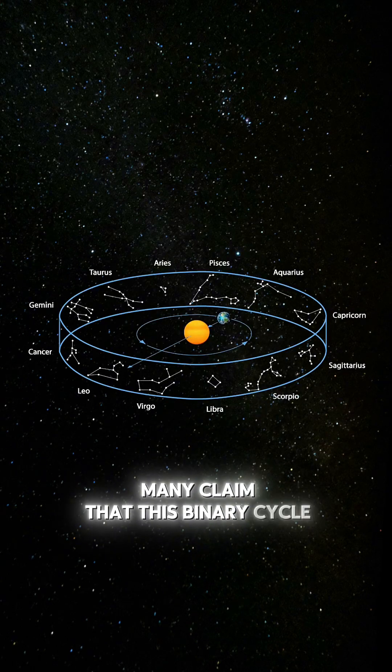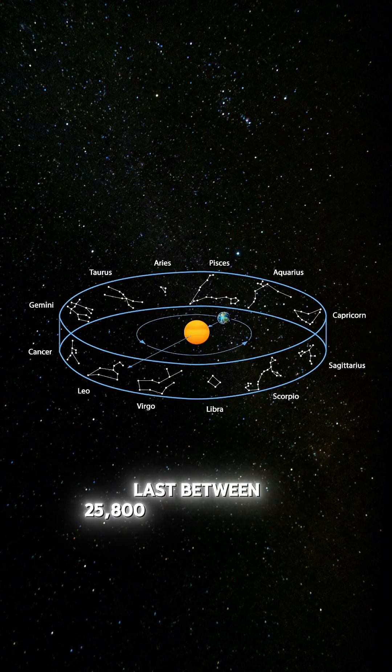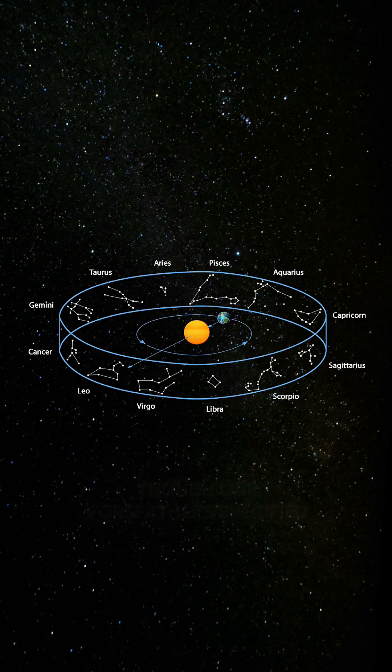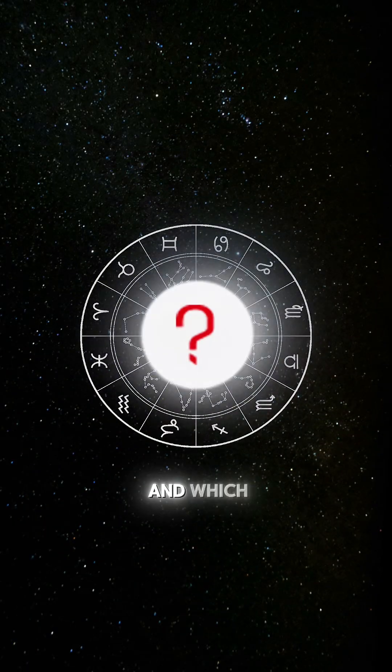Many claim that this binary cycle, reflected in Earth's wobble, lasts between 25,800 and 25,920 years, though our forefathers specified that it is 24,000 years in length. So why the difference, and which is correct?